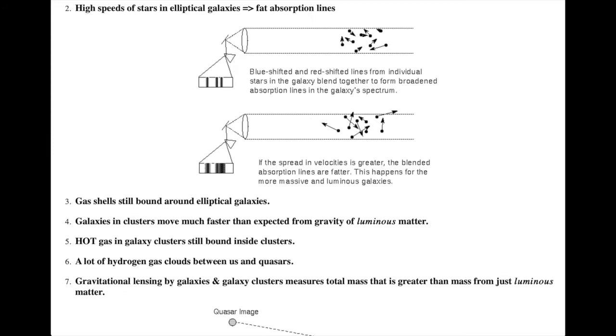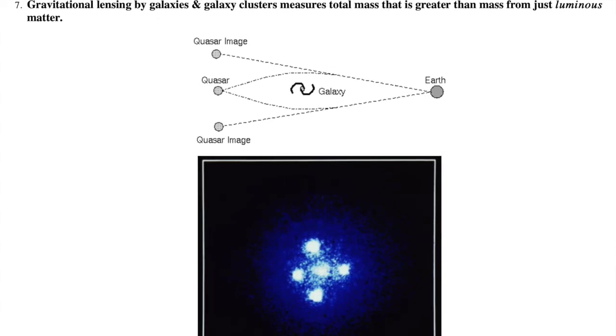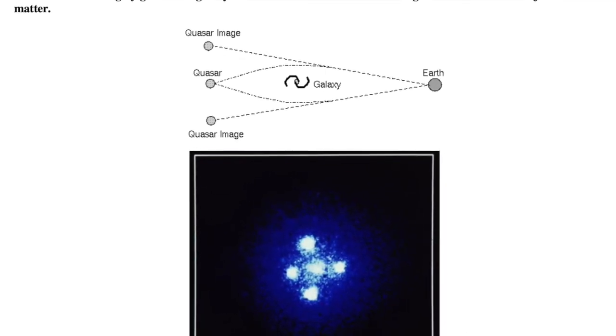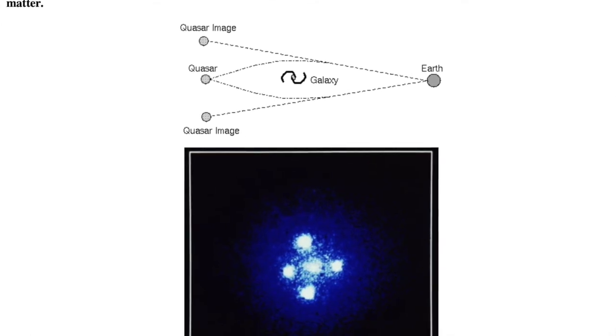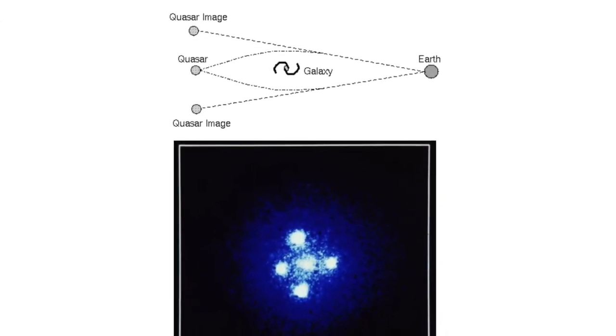Gravitational lensing of the light from distant galaxies and quasars by closer galaxies or galaxy clusters enables us to calculate the amount of mass in the closer galaxy or galaxy cluster from the amount of bending of the light. The derived mass is greater than the amount of mass in the visible matter.